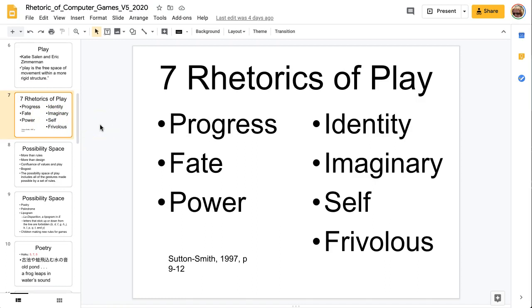Now according to Sutton Smith, there are seven different rhetorics of play: progress, fate, power, identity, imaginary, self, and frivolous. Progress is kind of like a plot. Fate is something that cannot be avoided, and of course there's always an element of power. There are players in the game that have more power and others that have less power. Then there's identity. Each role of each different player is a different identity, and people must use their imagination because it's not real. There is a sense of self because the identity means that you are different from other people. And finally, frivolous is the last rhetoric of play. Frivolous means not essential, not important, not necessary.